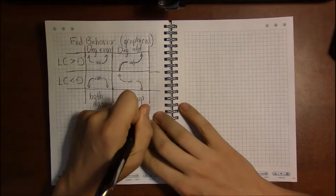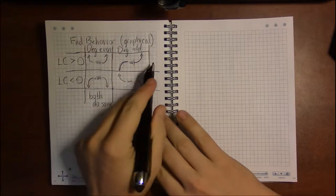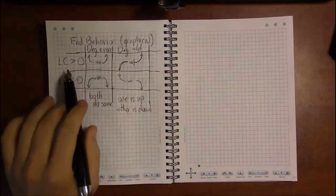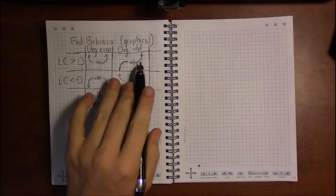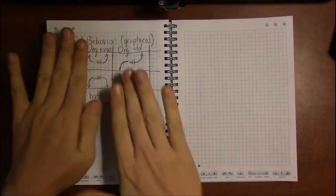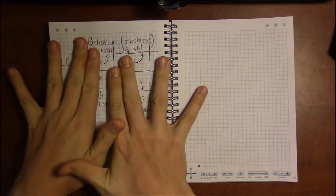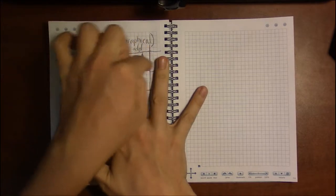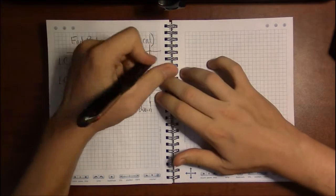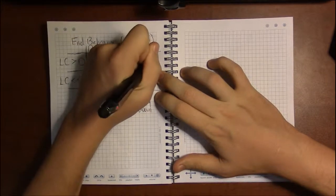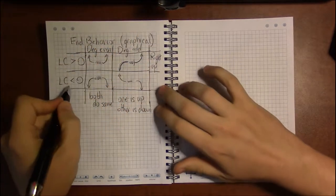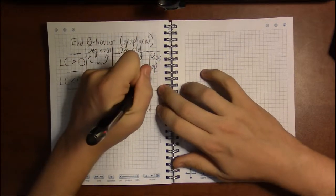It's harder to see what's in common on the rows to generalize what the leading coefficient tells you. But if you look at the right-hand end, ignoring the left side, the right ends do the same thing in each row. In the top row, the right goes up, and in the bottom row, the right end goes down.